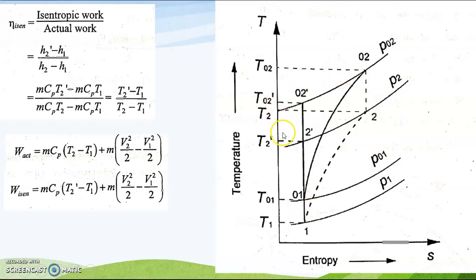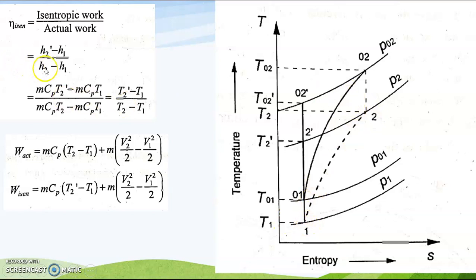We have now discussed all four points: 1, 2, 2-dash, 01, and 02-dash. The isentropic efficiency is equal to isentropic work divided by actual work. Isentropic work corresponds to compression from 1 to 2-dash, expressed in terms of enthalpy as h2-dash minus h1. Actual work is h2 minus h1, working from point 1 to point 2. So isentropic efficiency equals (T2-dash minus T1) / (T2 minus T1).